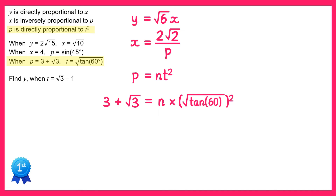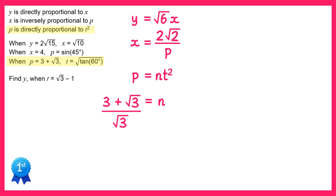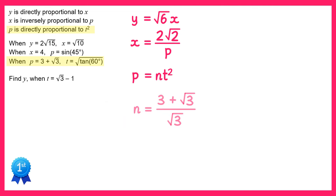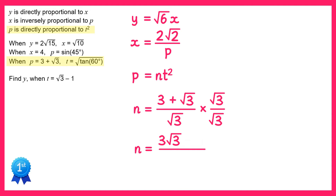When you square a square root those cancel each other out, so we can just write this as tan 60. The value of tan 60 is an exact value you should know — that's square root 3. If we divide both sides by square root 3 we get n equals 3 plus root 3 over root 3. We've got a surd on the bottom and we don't like that, so we rationalise the denominator by multiplying by root 3 over root 3. On the top we get 3 root 3 plus 3, and on the bottom root 3 times itself is just 3. There's a common factor of 3 that we can cancel out, leaving square root 3 plus 1.